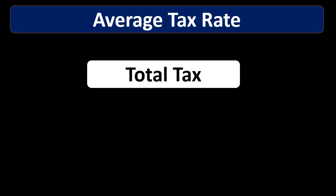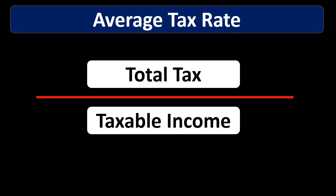So how much do we pay on average in terms of taxes? To calculate that, as you would calculate any average, you take the total tax — how much we're actually paying — and divide it by the taxable income, and that gives us the average tax rate. Note that we're talking about taxable income, meaning taxable income after above-the-line and below-the-line deductions. So this number is still very different from how much we actually earn in gross revenue.